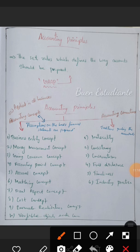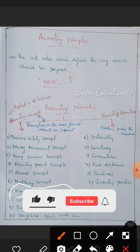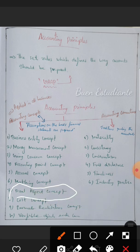The Dual Aspect Concept states that every business transaction has two aspects — a debit aspect and a credit aspect. Every transaction affects at least two accounts, which is the foundation of double-entry bookkeeping.